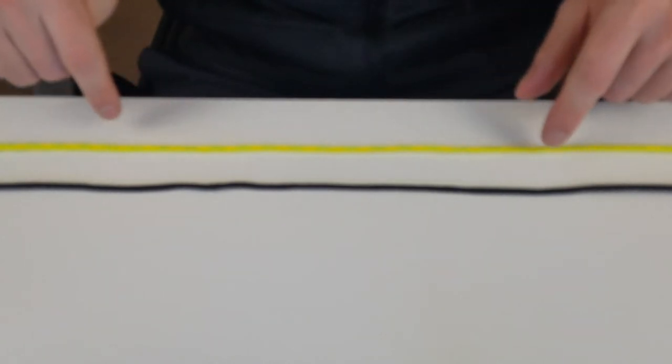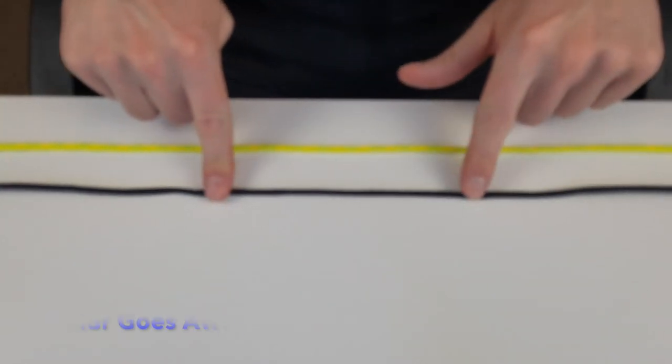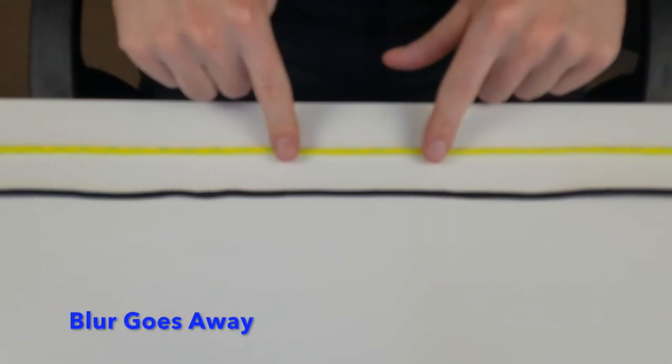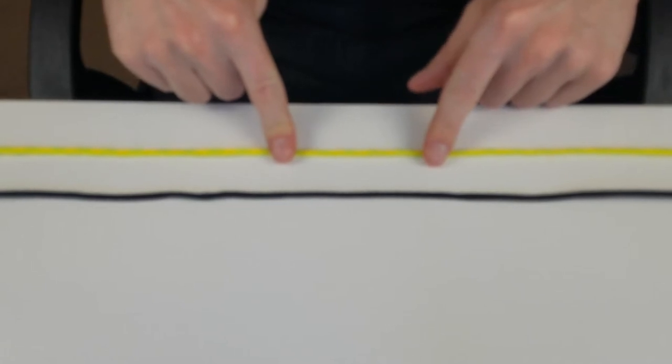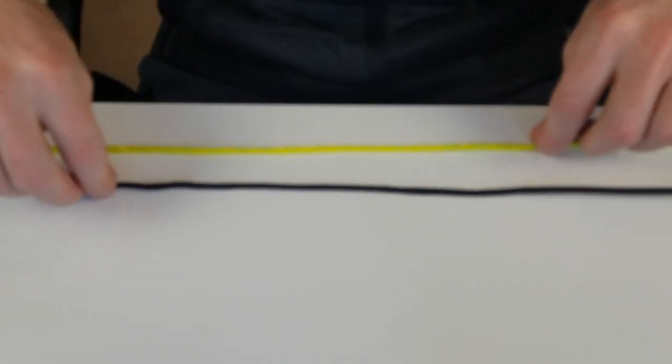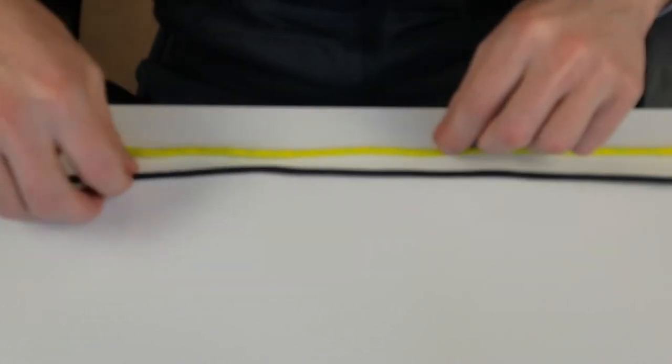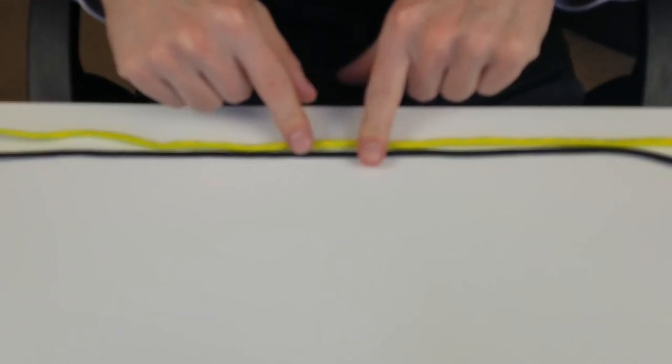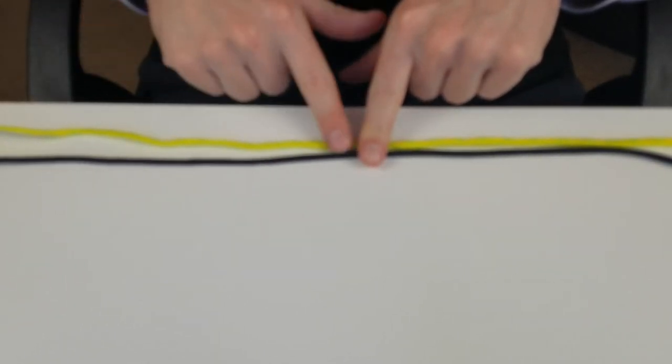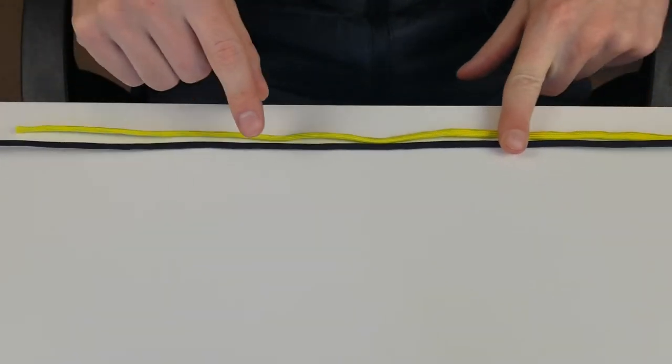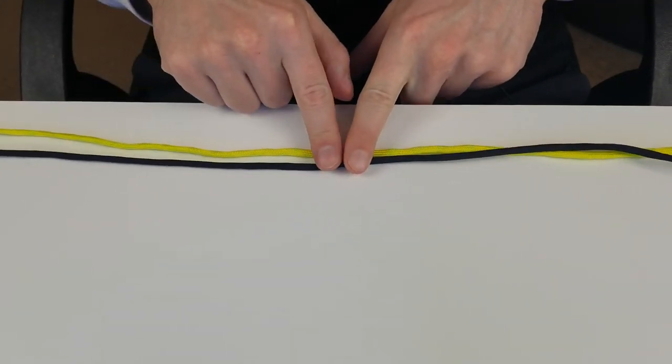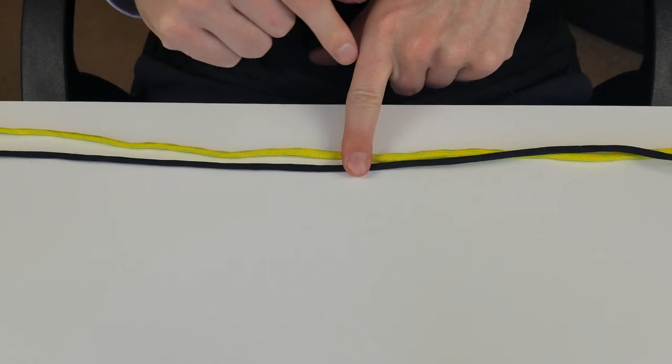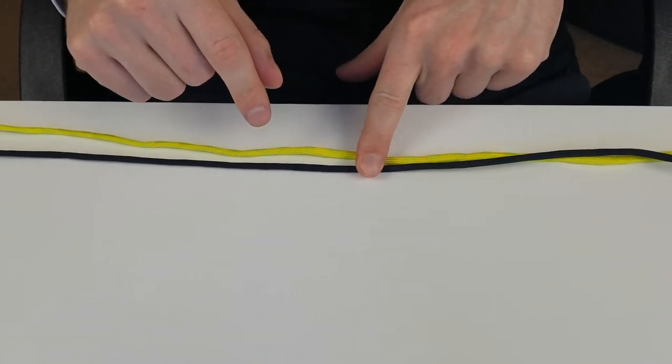You're going to want to lay your lines out just like this. In this example the black line is the braid and the yellow line is the monofilament. All we want to do is overlap them by a decent amount. The more you overlap them the easier it's going to be. Put your finger down here to hold them in place.